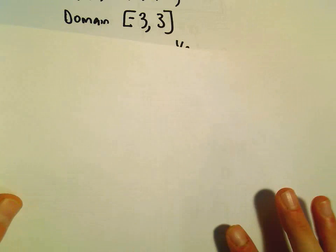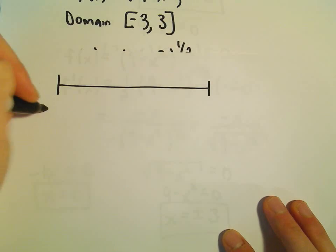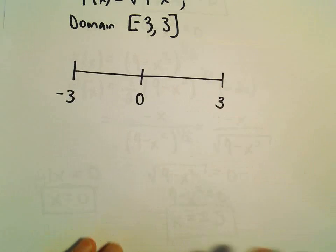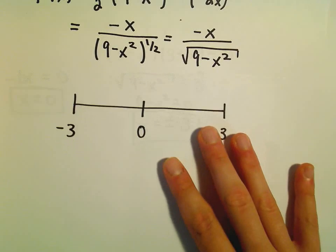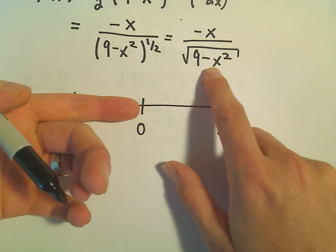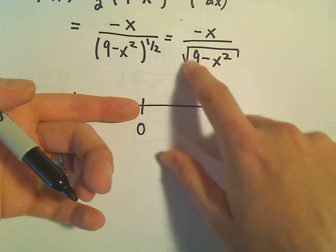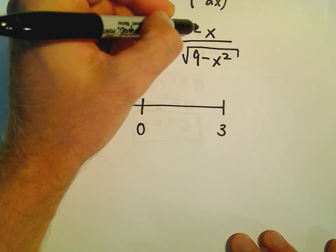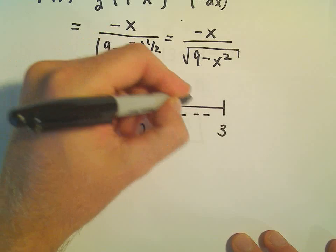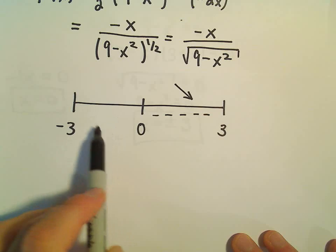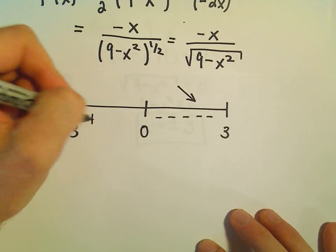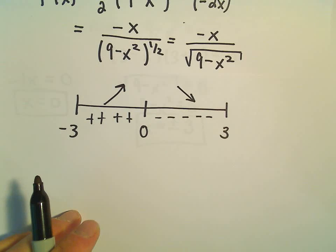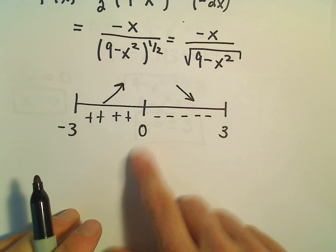For intervals of increase and decrease, I work from negative 3 to positive 3. Testing a number between 0 and 3, say x equals 1: the denominator (a square root) is always positive, but the numerator is negative, so we get a negative over a positive — the function is decreasing. Testing x equals negative 1: the numerator is positive and the denominator is positive, so the function is increasing. So f is increasing from negative 3 to 0, and decreasing from 0 to 3, meaning there is a local maximum at x equals 0.